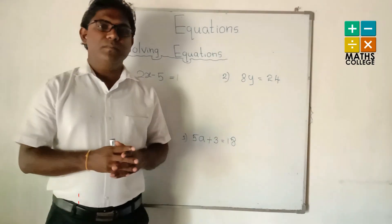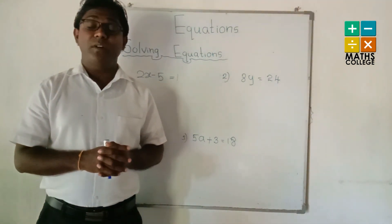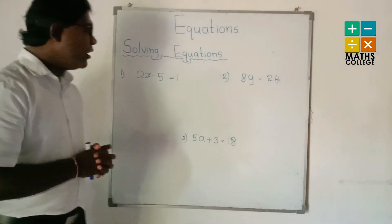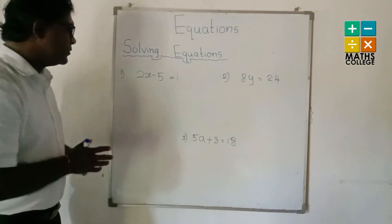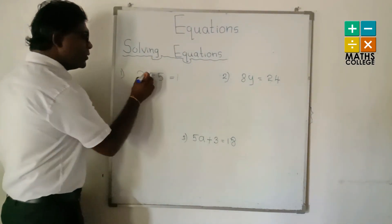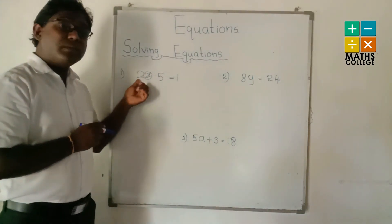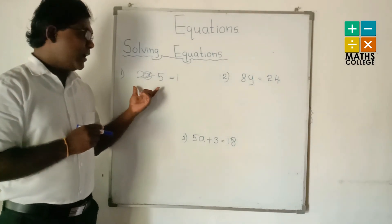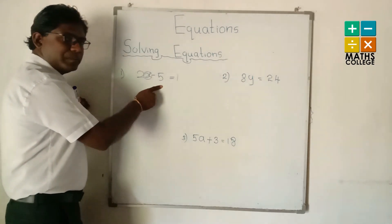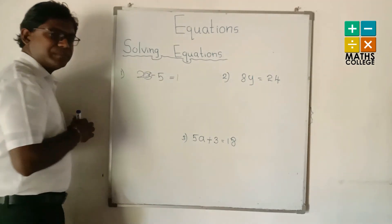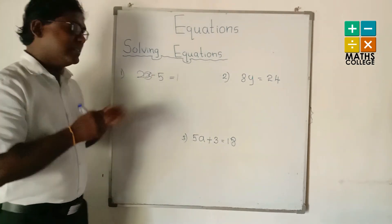I am going to explain how to solve the equation. We have to find x, which means we have to remove the 2 and 5 from this side. Firstly, we apply the opposite operation to remove the 5. Here the operation is subtraction, so the opposite operation is addition.